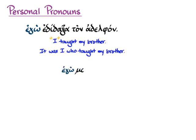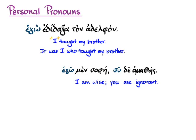Here's another example. Ego men sophe, su de amathes. Personal pronouns are really good to use when you're trying to create a contrast, especially with the lovely men...de construction. This means 'I am wise, you are ignorant.' The point of the contrast — the men and de — is between 'I' and 'you,' so the pronouns are very appropriate here.